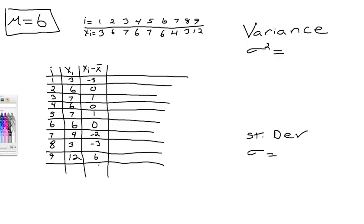I always double-check these right here because this is where I always mess up the simple stuff. So negative 3, 0, 1, 0, 1, 0, negative 2, negative 3, and 6. Excellent.